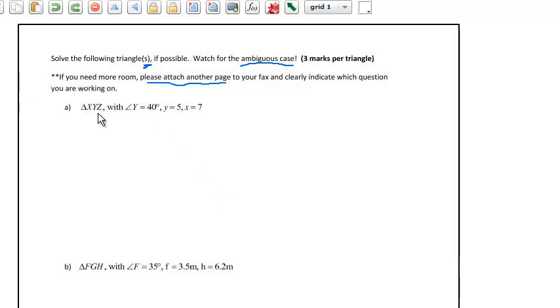Question number one, we're talking about triangle XYZ with angle Y is 40°, y is 5, X is 7. Notice we've got an angle, two sides. This angle is not the included angle, it's not in between these two sides. This would be a side-side-angle situation. We've got two sides and then an angle.